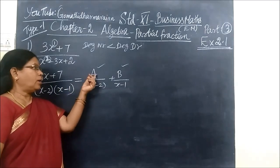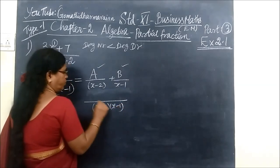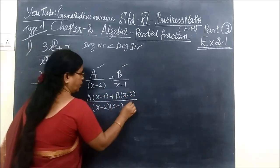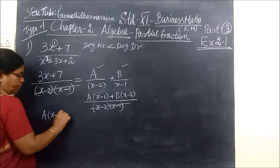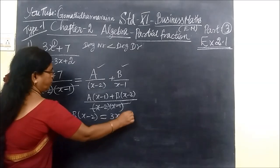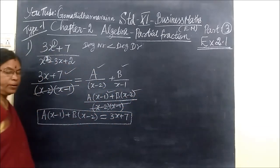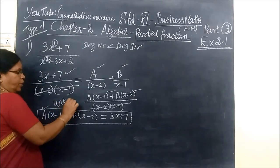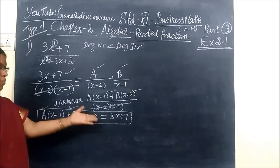Now you take LCM, x minus 2, x minus 1. Cross multiply. You can cancel the denominator. A bracket x minus 1 plus B bracket x minus 2 is equal to 3x plus 7. Denominator cancels and you write the remaining terms. When you want to find the unknown value, you substitute the unknown value on LHS.